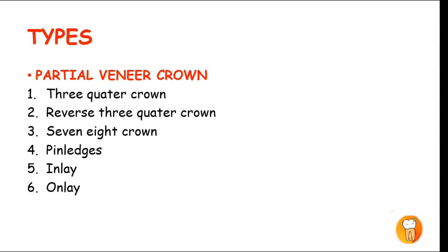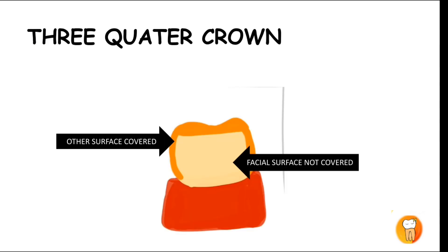The seven types of partial veneer crown are: three-quarter crown, reverse three-quarter crown, seven-eighths crown, pin ledge, inlay, onlay, and laminate veneers. The three-quarter crown covers three to four axial surfaces and the occlusal surface, but not the facial surface.